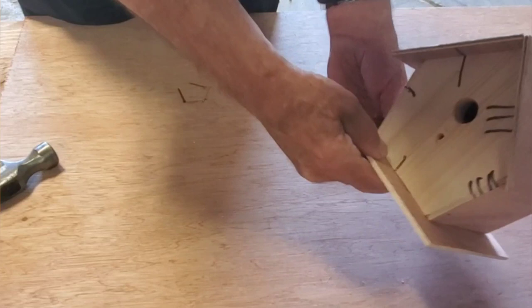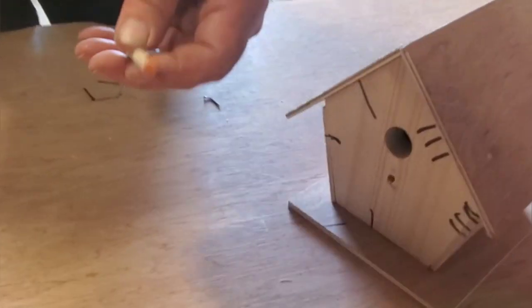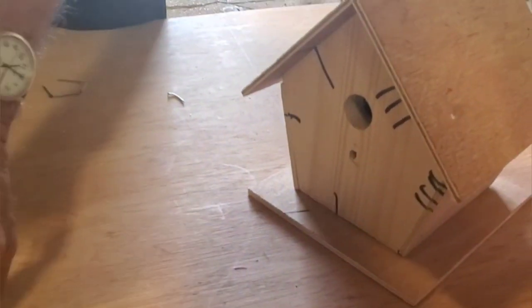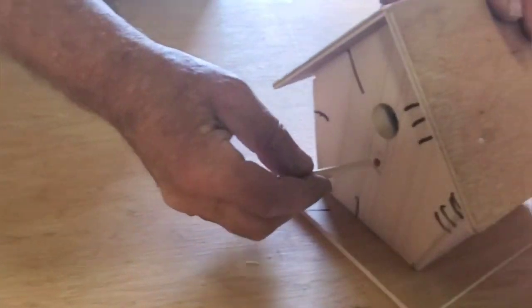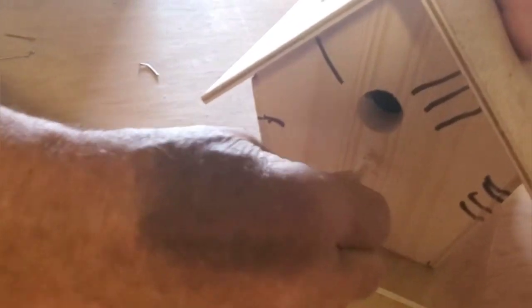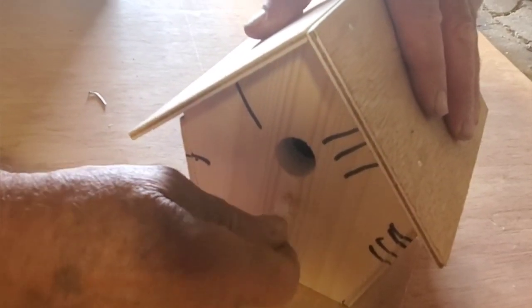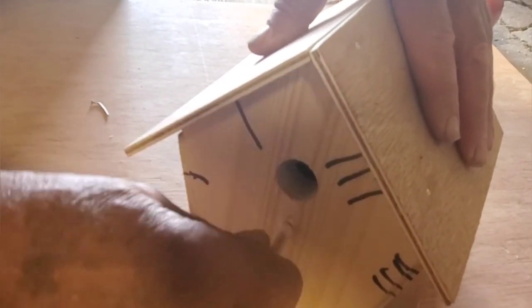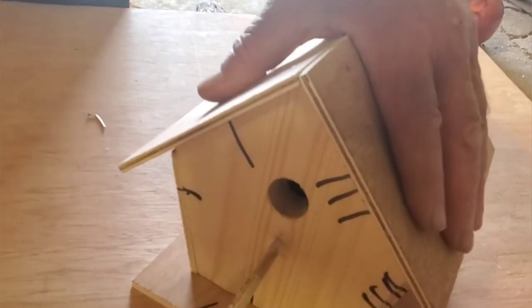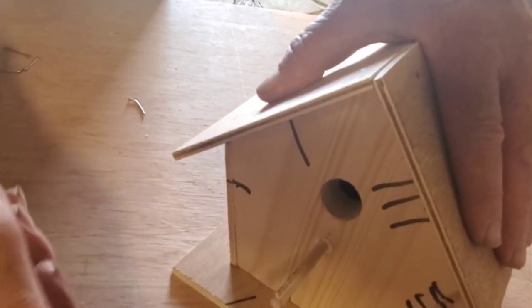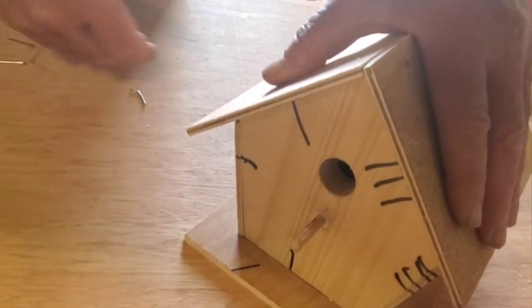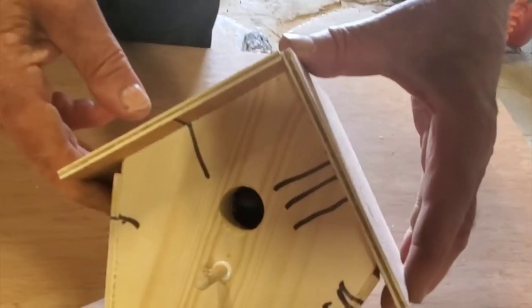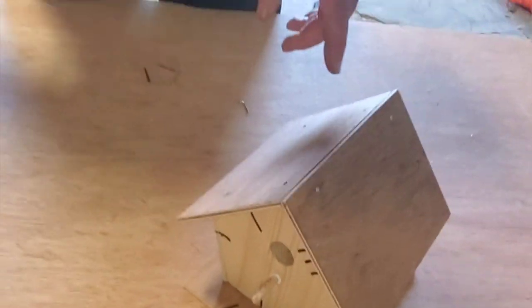Now we're going to take our perch. We're going to put a bit of glue on the perch and install it into the quarter inch hole underneath the perch. This one here is fairly tight, so we're going to tap it in a little bit with the hammer, leaving it out about an inch. And that is basically our finished birdhouse.